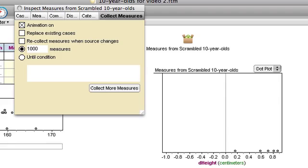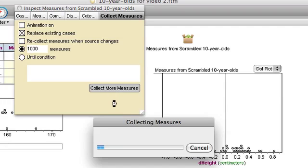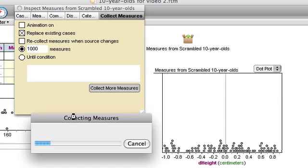Going to change it to a thousand measures. Replace the existing cases. Turn off animation. Do collect more measures. And let's watch that distribution grow.